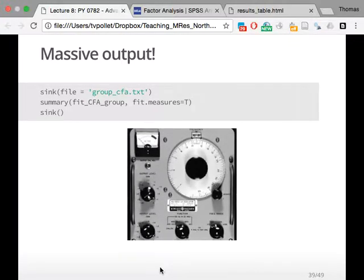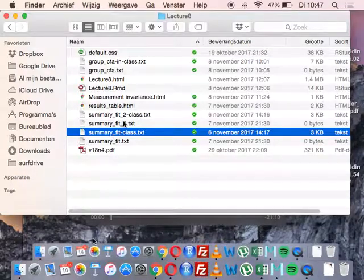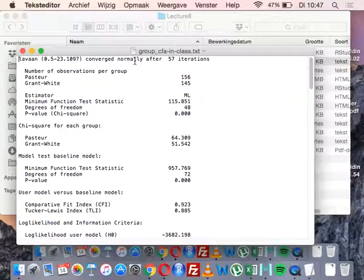Massive output, overload. This is what I should have shown you before. The output will go to the group CFA text, and it's in between two sinks. If it's not in between two sinks, then things might go awry. It will tell us now that we have two groups - a group called Pasteur and a group called Grant White, two different schools. We can get estimates split out for certain groups, but also for the overall model.